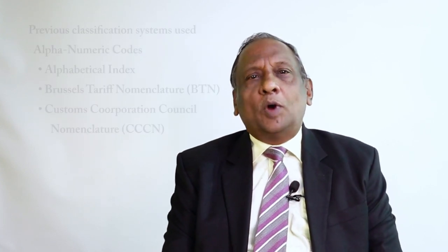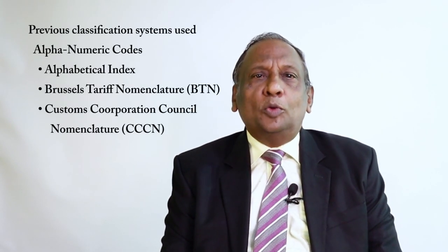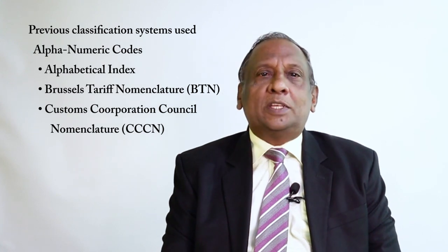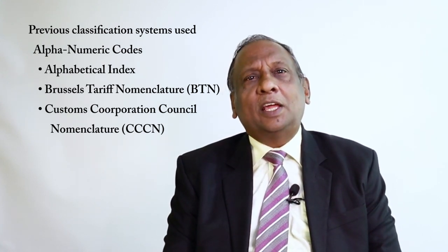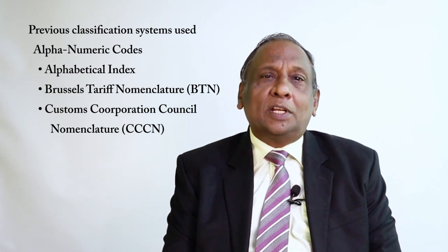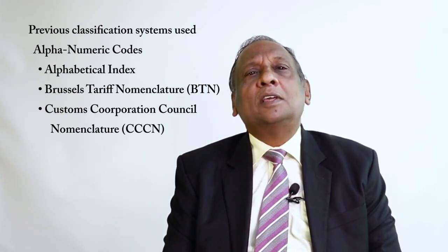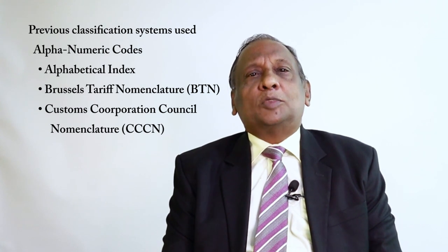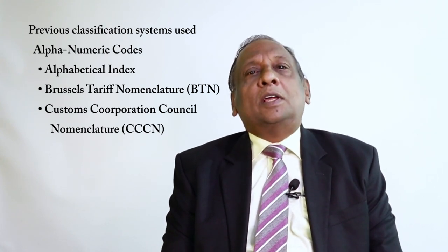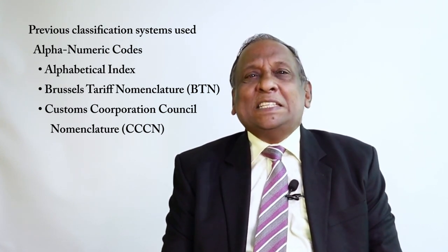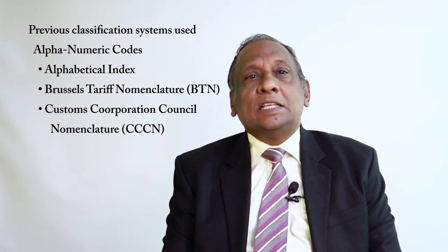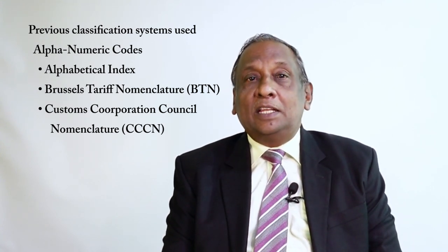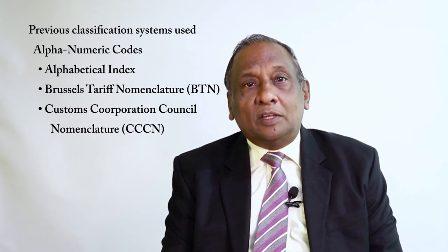HS works with numeric codes. Previous to HS we had systems called the alphabetical index and the Brussels Tariff Nomenclature, BTN, which was later renamed as Customs Cooperation Council Nomenclature, CCCN. Now we have come to HS since 1988, that is 33 years ago.